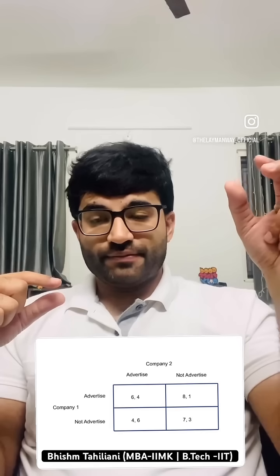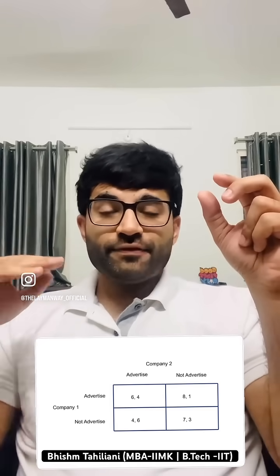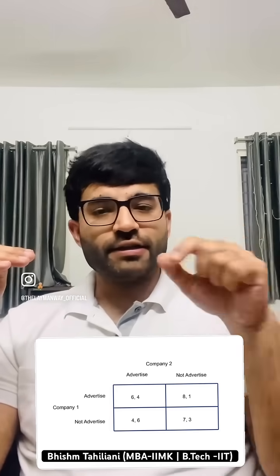Now suppose Firm B doesn't advertise. Again, Firm A has two options. If Firm A advertises, it gains 20 rupees. If Firm A doesn't advertise and Firm B also doesn't advertise, they each gain 15 rupees. The maximum payoff is 20, so again Firm A's dominant strategy is to advertise.